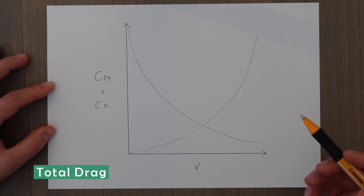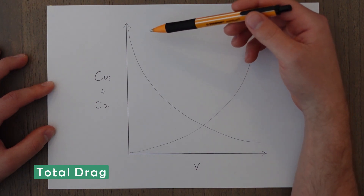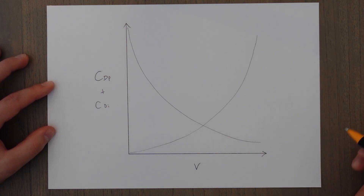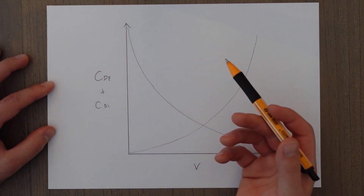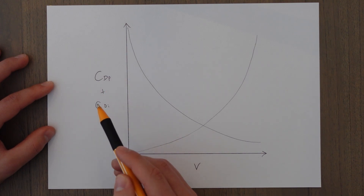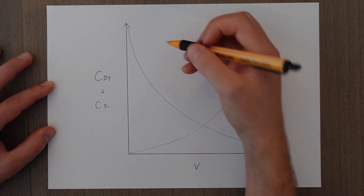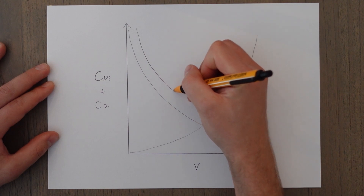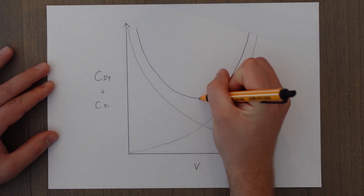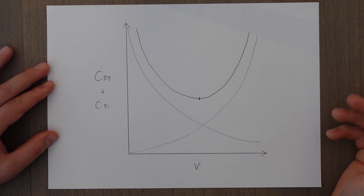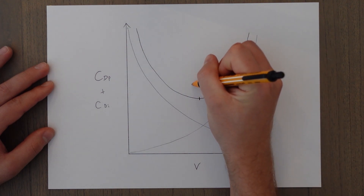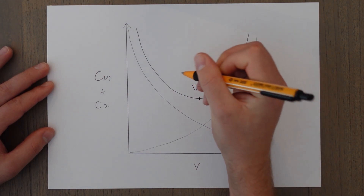Let's look at both parasite and induced drag together. If we plot them together we get induced drag coming down and parasitic drag coming up. The total coefficient of drag is simply the coefficient of drag parasitic plus the coefficient of drag induced. Adding these two lines together gives a U-shape. From this graph we can see some interesting points.